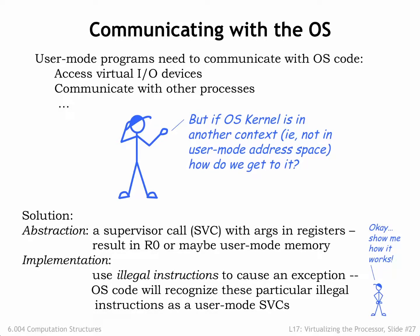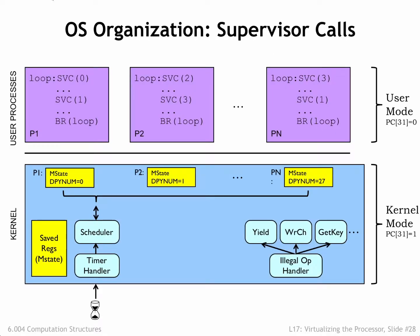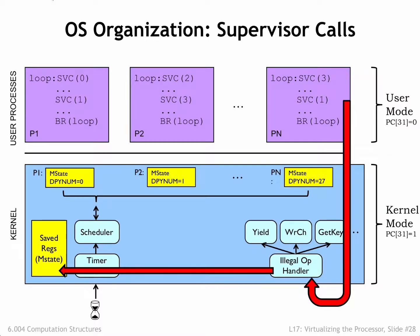Let's see how this would work. Here's our user mode / kernel mode diagram again. Note that the user mode programs contain supervisor calls with different indices, which, when executed, are intended to serve as requests for different OS services. When an SVC instruction is executed, the hardware detects the opcode field of 1 as an illegal instruction and triggers an exception that runs the OS ILOP handler, as we saw in the previous segment. The handler saves the process state in the temporary storage area, then dispatches to the appropriate handler based on the opcode field.